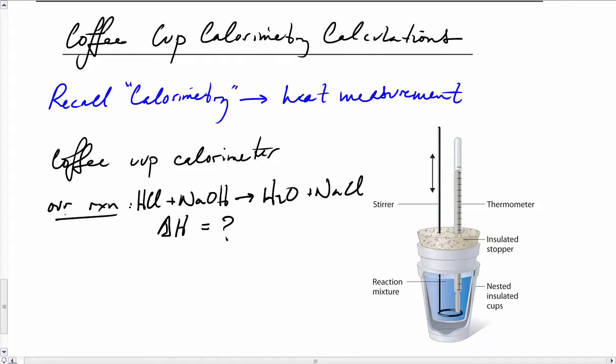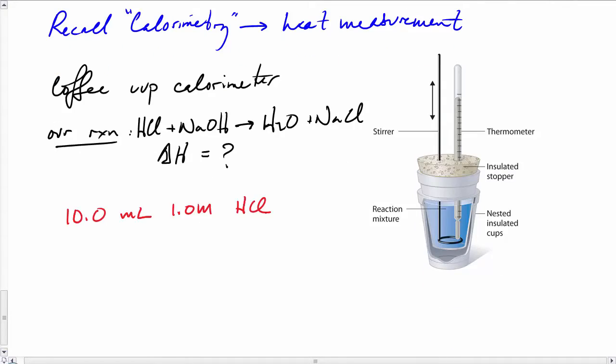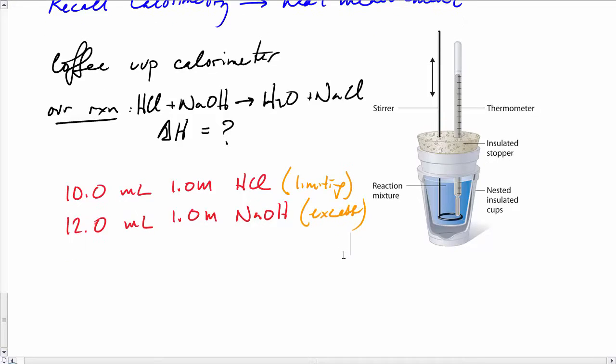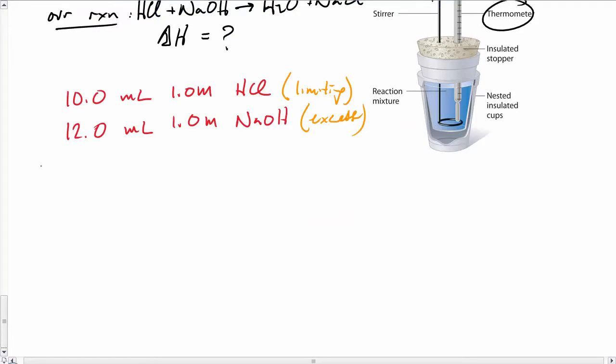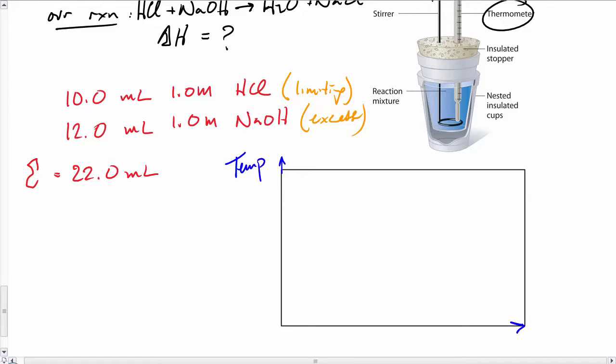We use the calorimeter to measure it. We have 10 mL of hydrochloric acid and 12 mL of 1 molar NaOH. This ensures the hydrochloric acid is limiting by using a little more NaOH. We use a LabQuest instead of a thermometer. Totally, we have 22 mL of solution when the reaction proceeds.